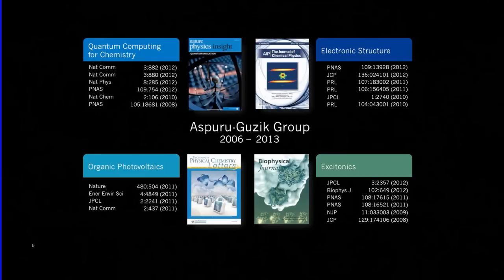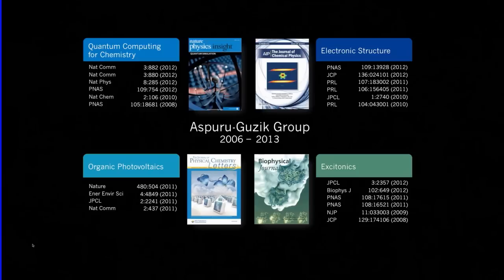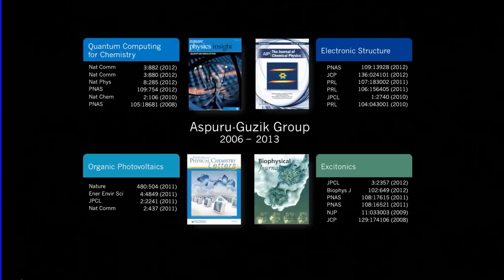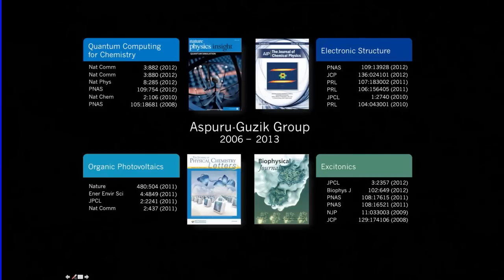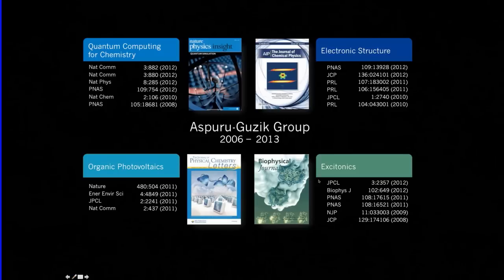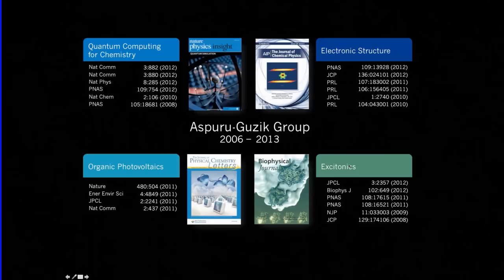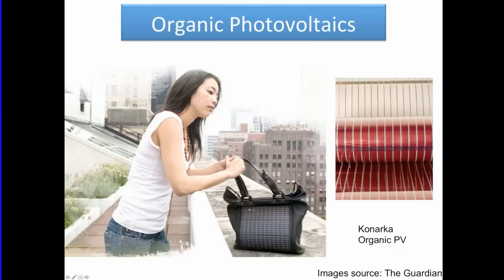We have been very interested in the actual behavior of molecules in strongly dissipative environments, and we have developed theories such as density functional theory for open quantum systems. We're also interested in the concept of organic photovoltaics — solar cells made of plastic — which is the subject of this talk. I'm also very interested in the field of excitonics, or how electronic energy is transferred, for example in photosynthesis. Today we'll talk about organic photovoltaics.